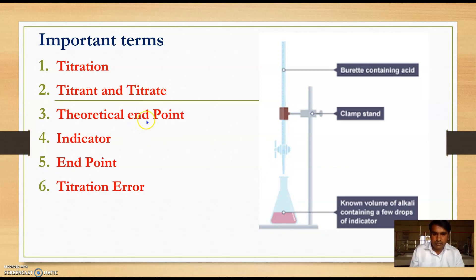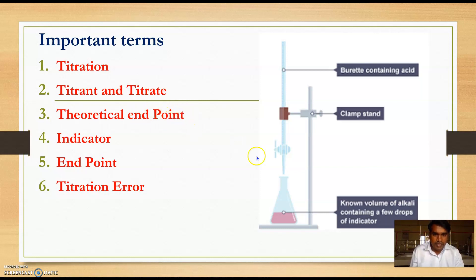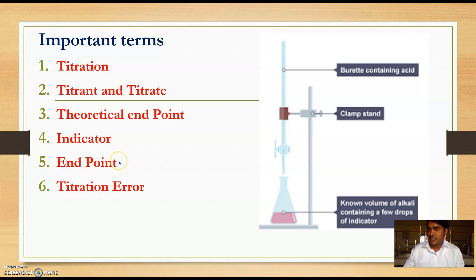The next term is theoretical end point: the volume at which the reaction is actually completed by adding a known concentration solution in stoichiometric amount is called the theoretical end point. The next term is indicator: a substance which is used to detect visual changes occurring in the titration process is called an indicator. The end point of titration is the volume at which the completion of reaction is observed by using an indicator.